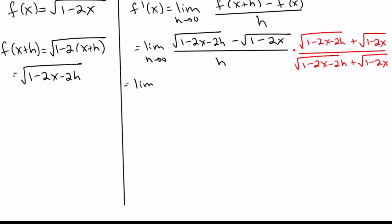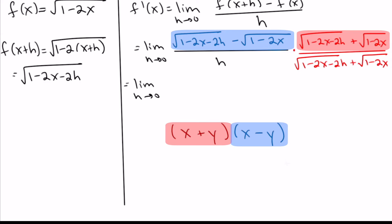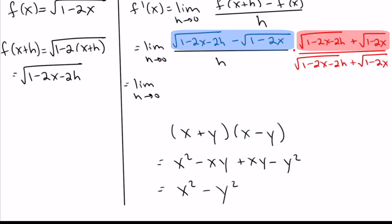The trick is that the top is a difference of squares. Remember, difference of squares is when you multiply two things that are exactly the same except one has a plus and one has a minus in the middle. If you foil that out, you get x squared minus xy plus xy minus y squared, and the middle terms cancel, leaving just x squared minus y squared — the first thing squared minus the second thing squared. So on a test you can use this shortcut rather than doing all the big multiplying.